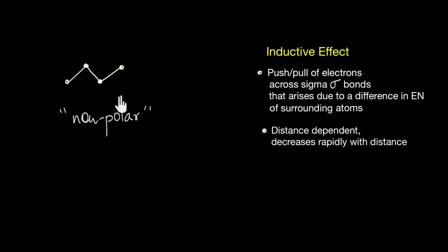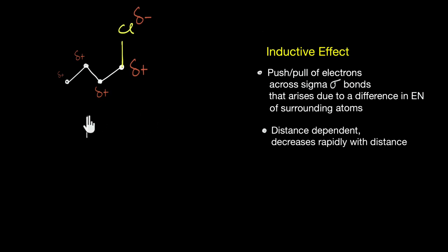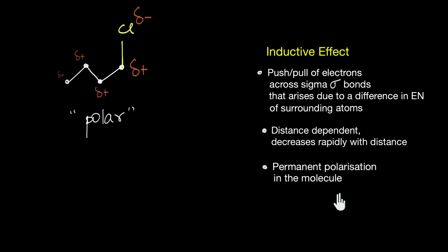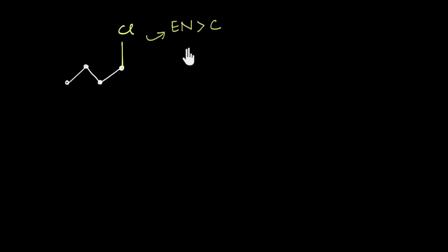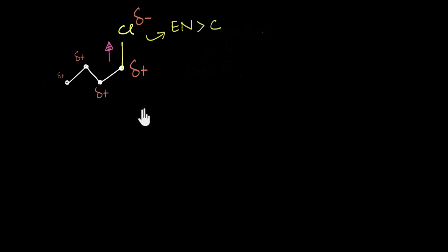While butane is non-polar with no positive or negative charges, addition of a chlorine atom instantly polarizes the molecule, creating partial positive and negative charges. As long as the chlorine atom is present, the molecule will always remain polar. Therefore, the inductive effect is also a permanent effect — it creates permanent polarization in a molecule. Whenever something more electronegative than carbon is attached to a carbon chain, there is an electron pull from the chain towards the electronegative element, developing partial positive charge in the molecule.